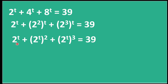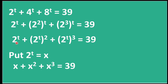Because we want to make something common. Look — we have 2^t in the first term, and similarly 2^t in all three terms. So now let's put 2^t equal to x, and we will substitute x throughout.